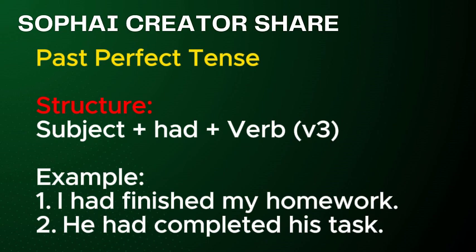Past perfect tense. Structure: Subject plus had, plus verb V3. Examples: 1. I had finished my homework. 2. He had completed his task.